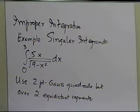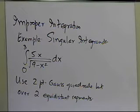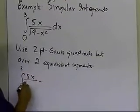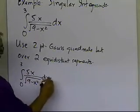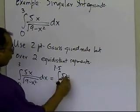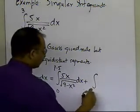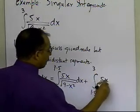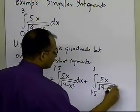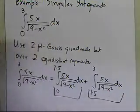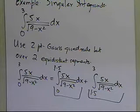So basically we'll have four quadrature points, but we're going to break it up into two equidistant segments and apply the two-point Gaussian quadrature rule over each segment, and see whether we get a better approximation. We are taking the integral from 0 to 3 of 5x divided by the square root of 9 minus x squared dx, breaking it up from 0 to 1.5 and then from 1.5 to 3, applying the two-point Gaussian quadrature rule on each integral.